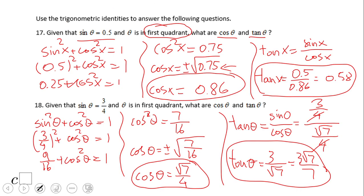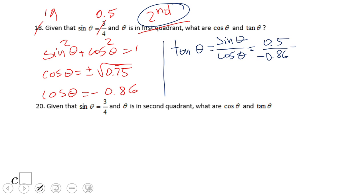So again, we're going to get negative 0.58. So this information here is crucial, second quadrant.